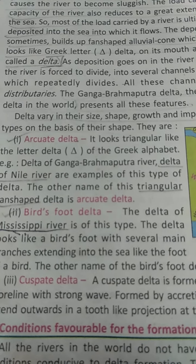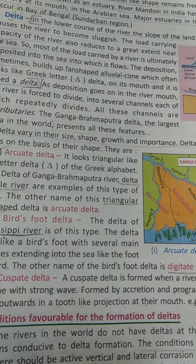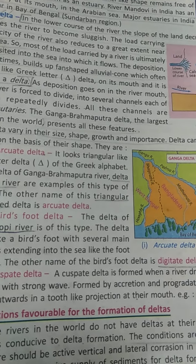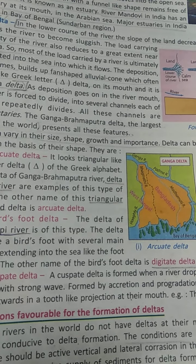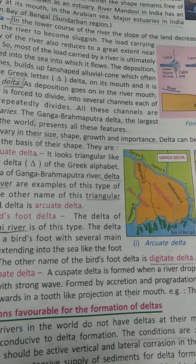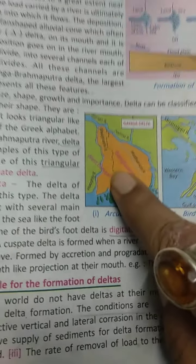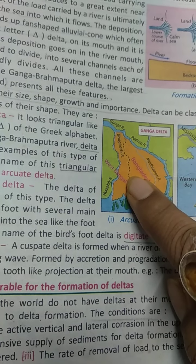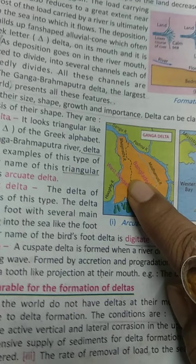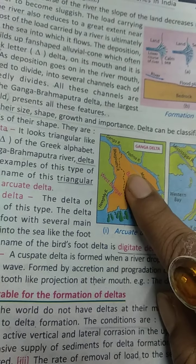The first is the arcuate delta. Arcuate delta is a triangular delta, which resembles the Greek alphabet delta sign. An example is the Brahmaputra delta — you can see it is in a triangular form. It is also known as a triangular fan or shell delta.